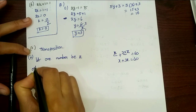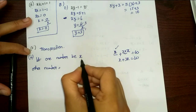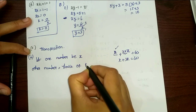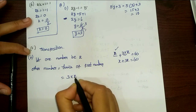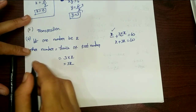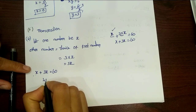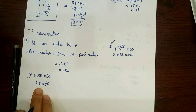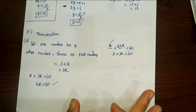The other number is thrice of the first number, so it is 3x. Adding them: x plus 3x equals 60, so 4x equals 60. Transposing, x equals 15.